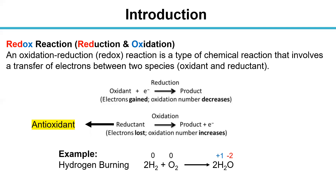Now we introduce the redox reaction — it's very important. Redox is a word combining reduction and oxidation. An oxidation-reduction reaction is a type of chemical reaction that involves the transfer of electrons between two species: the oxidant and the reductant. The oxidant gains electrons and its oxidation number decreases — this process is called reduction. The reductant loses electrons and its oxidation number increases — this is oxidation.